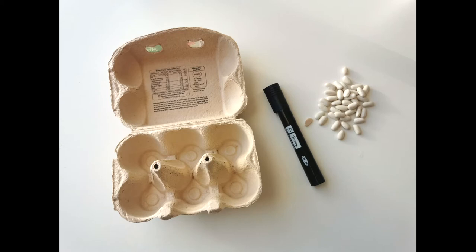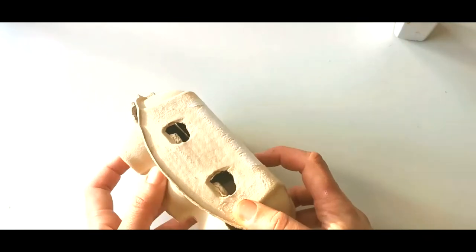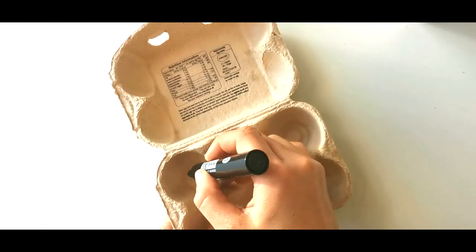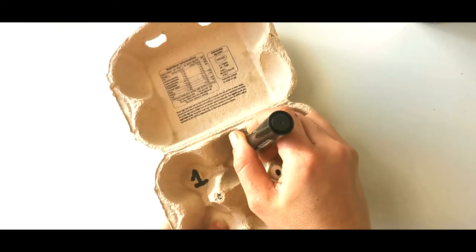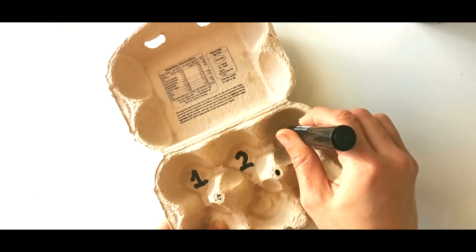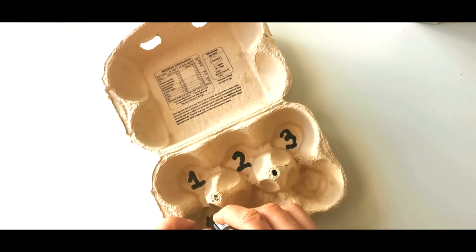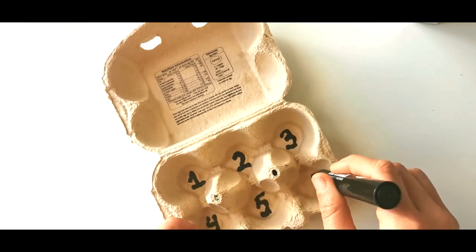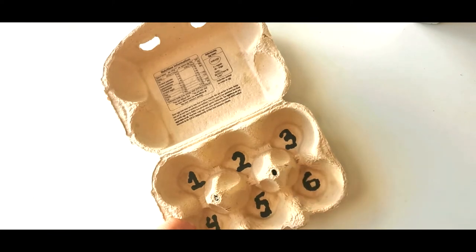We are going to use an egg container, a pen, and some beans. Ask a grown-up to write the numbers for you: one, two, three, four, five, and six.